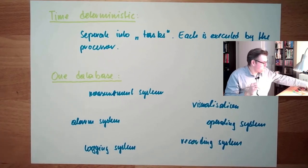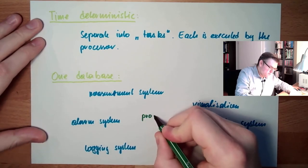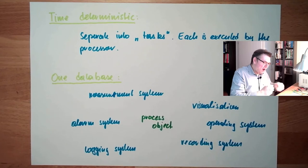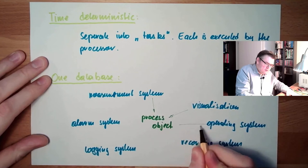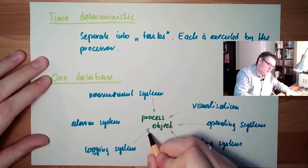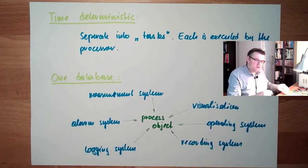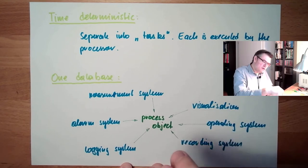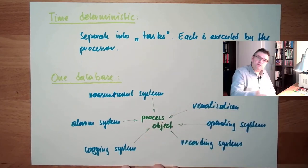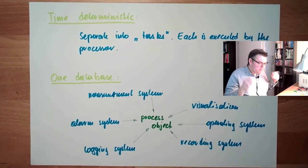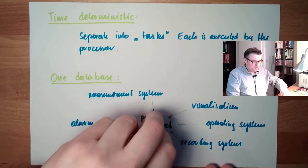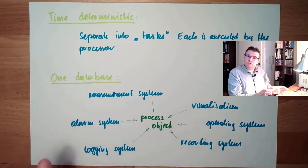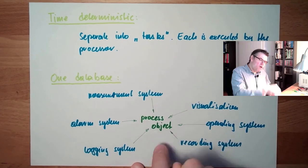There is one central process object, and all the other systems — measurement, alarm, recording, logging — are accessing this same process object. If I want to add a visualization and up to now I have none, I do not copy the process object. I simply add the visualization and say 'visualize this object' — it is already there. This is a typical design of a process control system: a model of the process with process objects, and all other parts refer to this one object in one database.